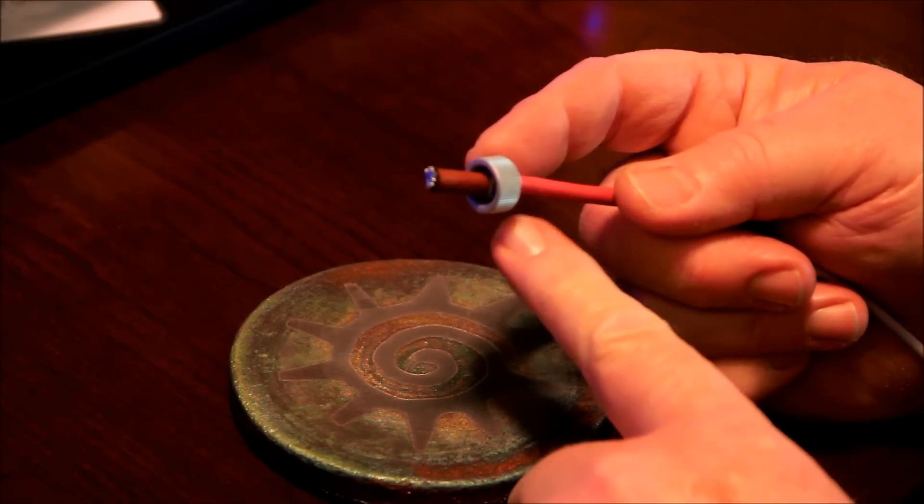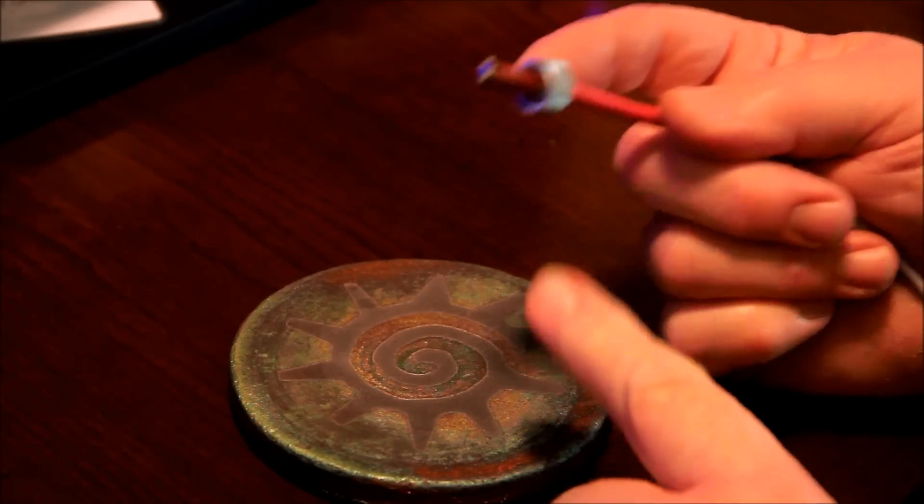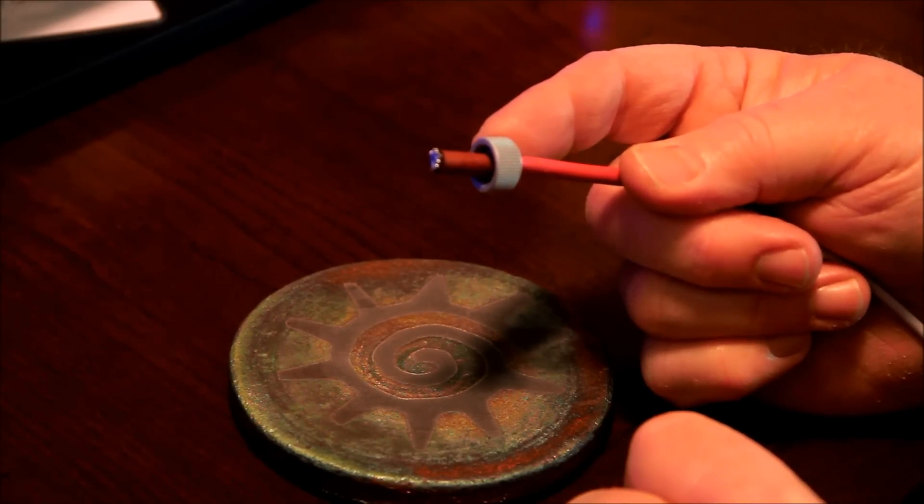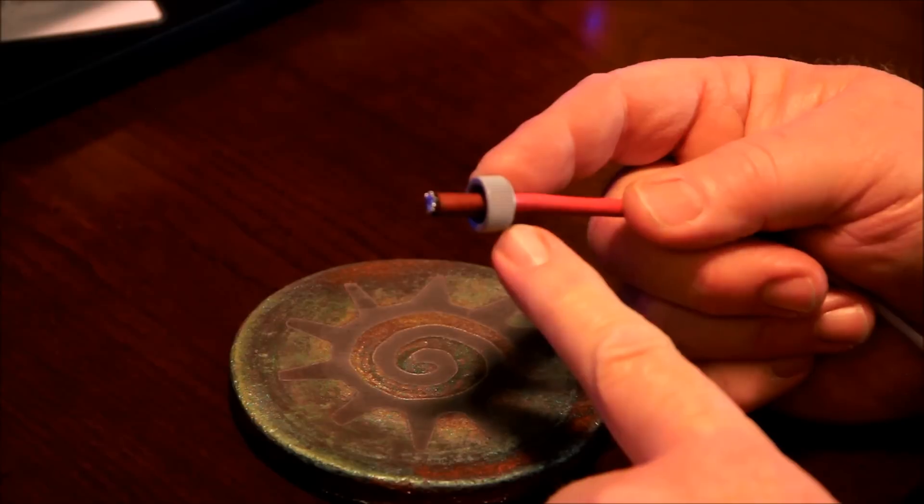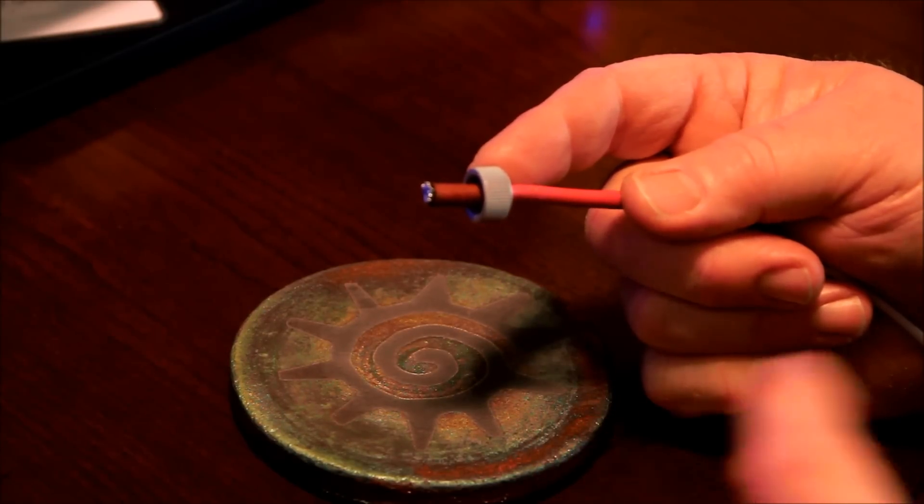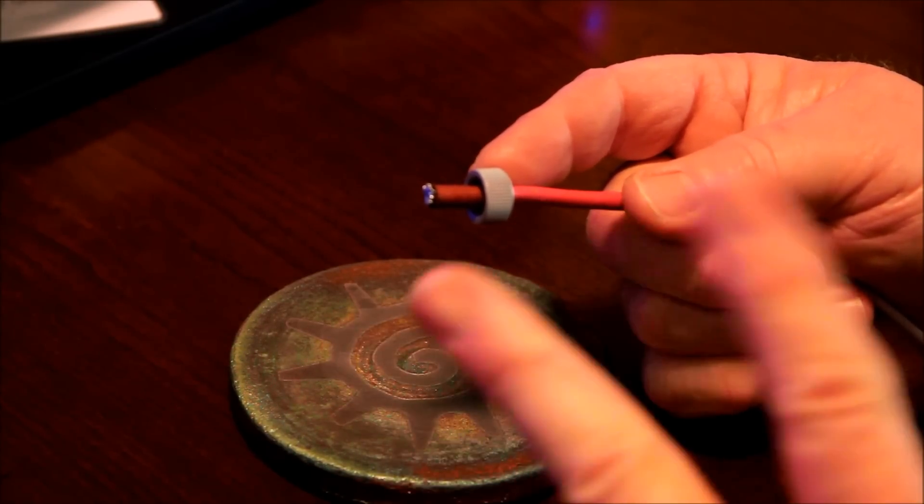So you will have a P-lead that attaches to one mag, so let's say the left mag. You'll have another one that will attach to the right mag. Now, that's usually the case where you actually have two magnetos.